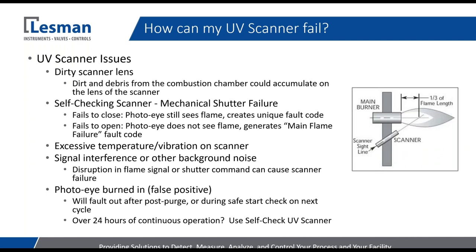Talking about UV scanners and how they can fail — the UV scanner is a lot more complex compared to the flame rod. A flame rod is a very simple rod, whereas a UV scanner has electricity, photo-eyes, and with self-checking UV scanners potentially mechanical shutters. You've got extra components that make up the scanner, which means there are different failure modes.